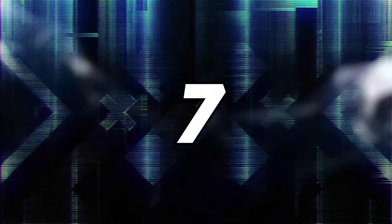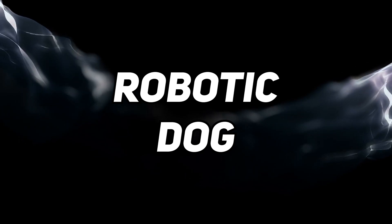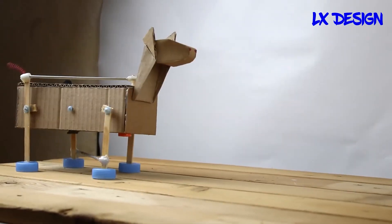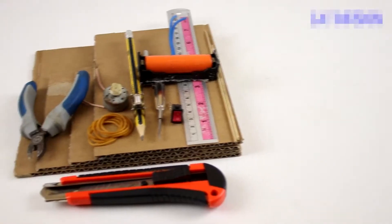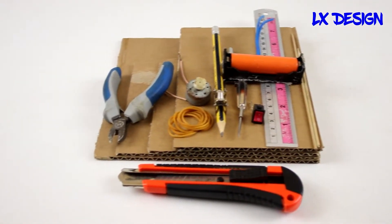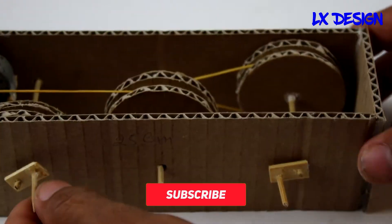Number seven: Robotic Dog. The seventh project is a Robotic Dog which is a robot that can walk and bark. You can make a Robotic Dog from a cardboard box, four wooden skewers, four corks, a buzzer and a micro bit.